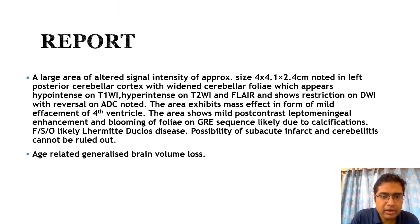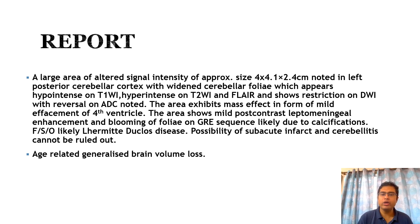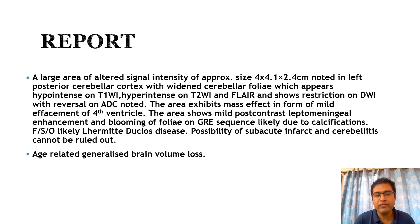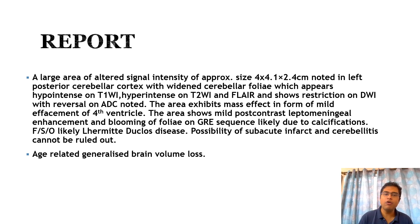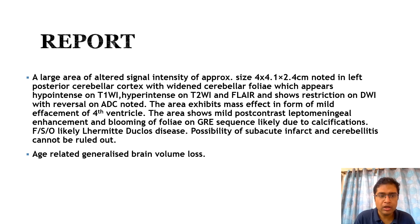The report described a large area of altered signal intensity in the left posterior cerebellar cortex with widened cerebellar folia — hypointense on T1, hyperintense on T2 and FLAIR, showing restriction on DWI with reversal on ADC. There is mild effacement of the fourth ventricle, mild post-contrast leptomeningeal enhancement, and intense blooming of the folia on GRE sequences, likely due to calcifications. The features were suggestive of Lhermitte-Duclos disease, but subacute infarct and cerebellitis could not be ruled out given the unclear clinical history. Age-related involutional changes were also noted.